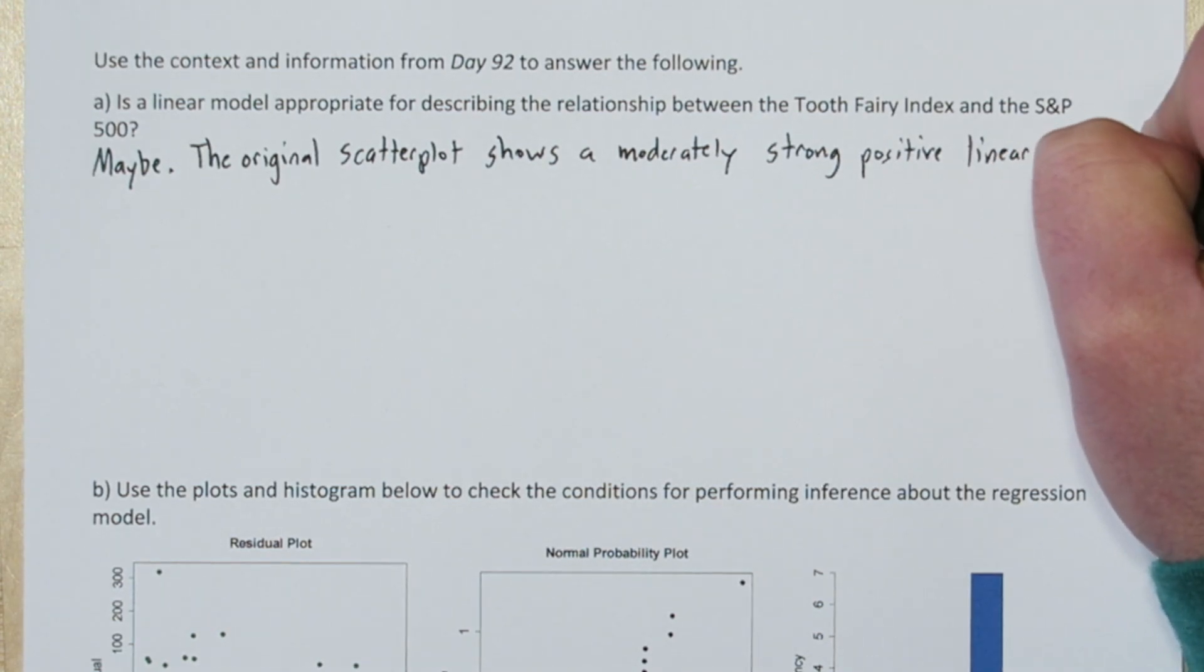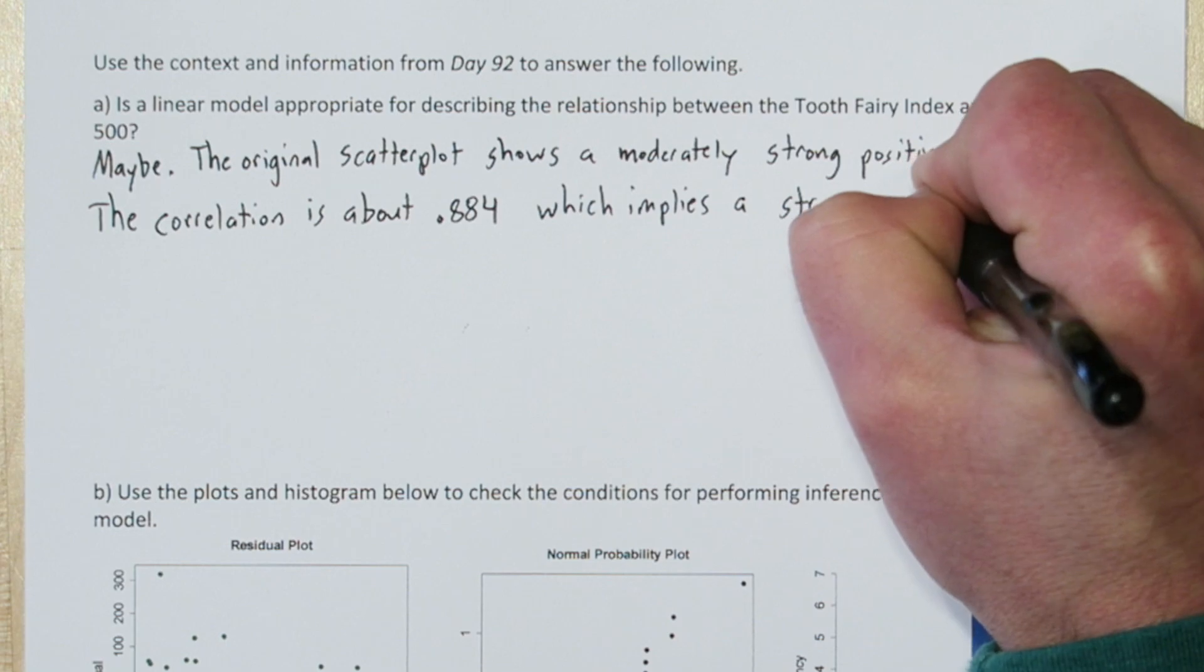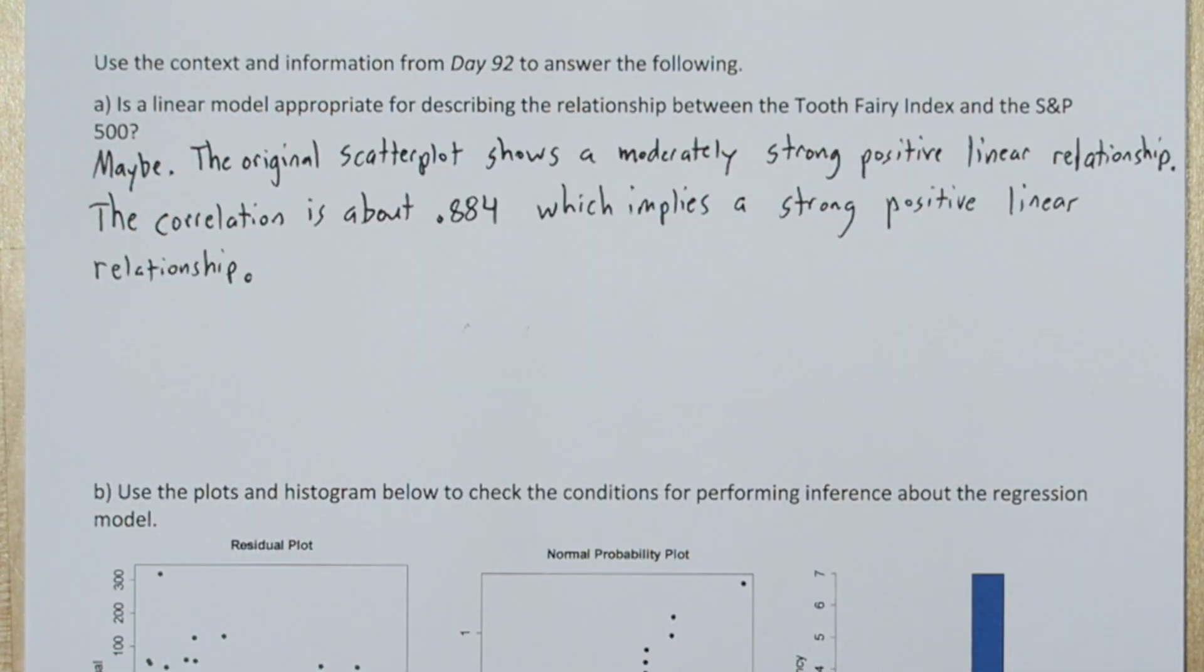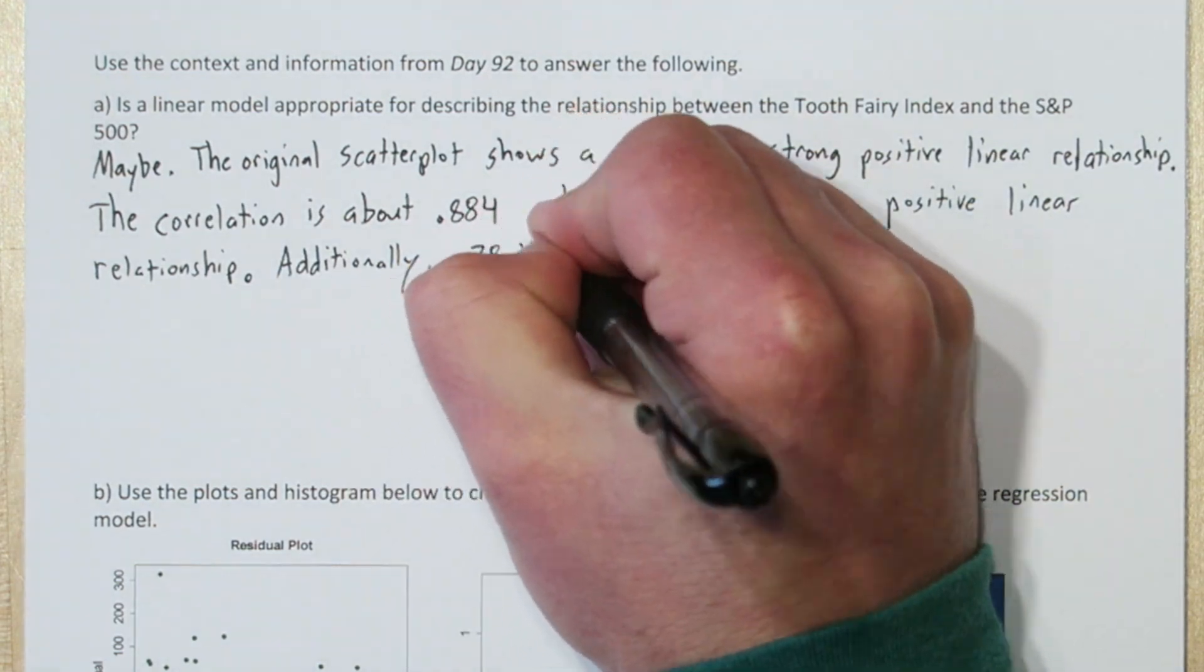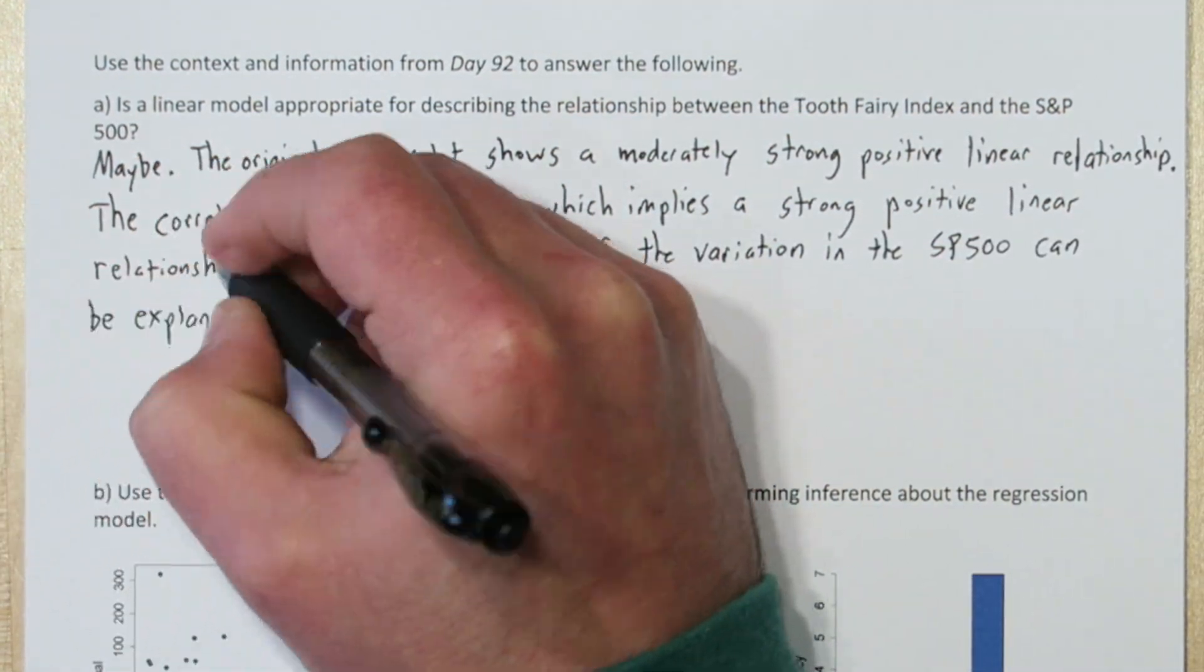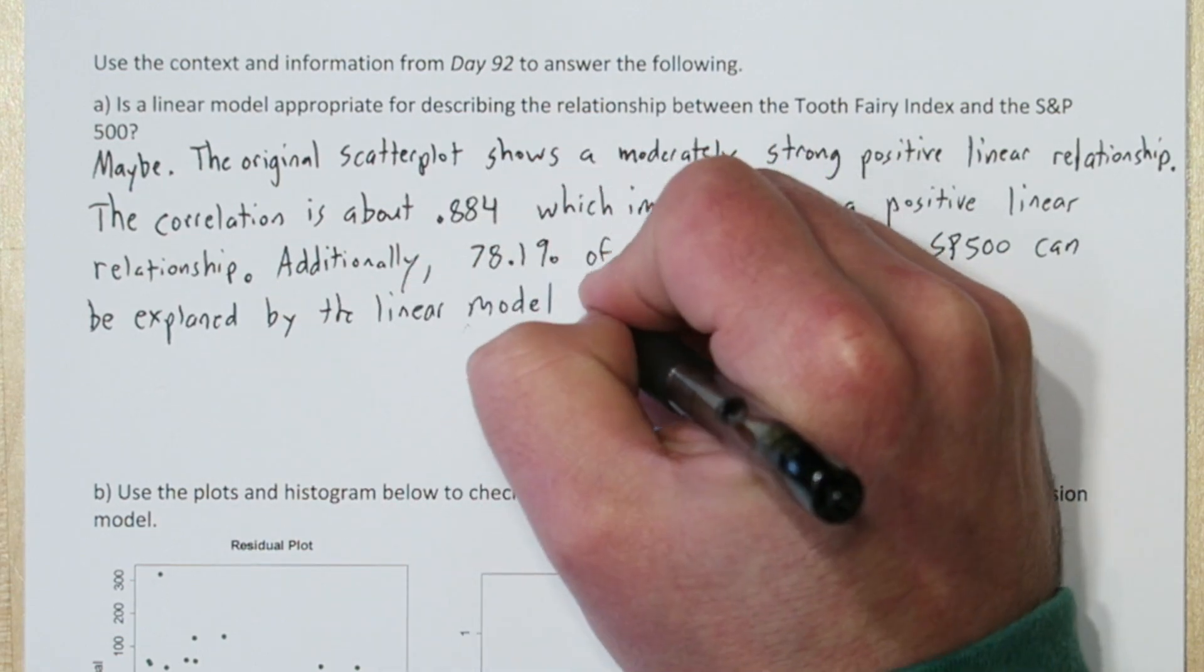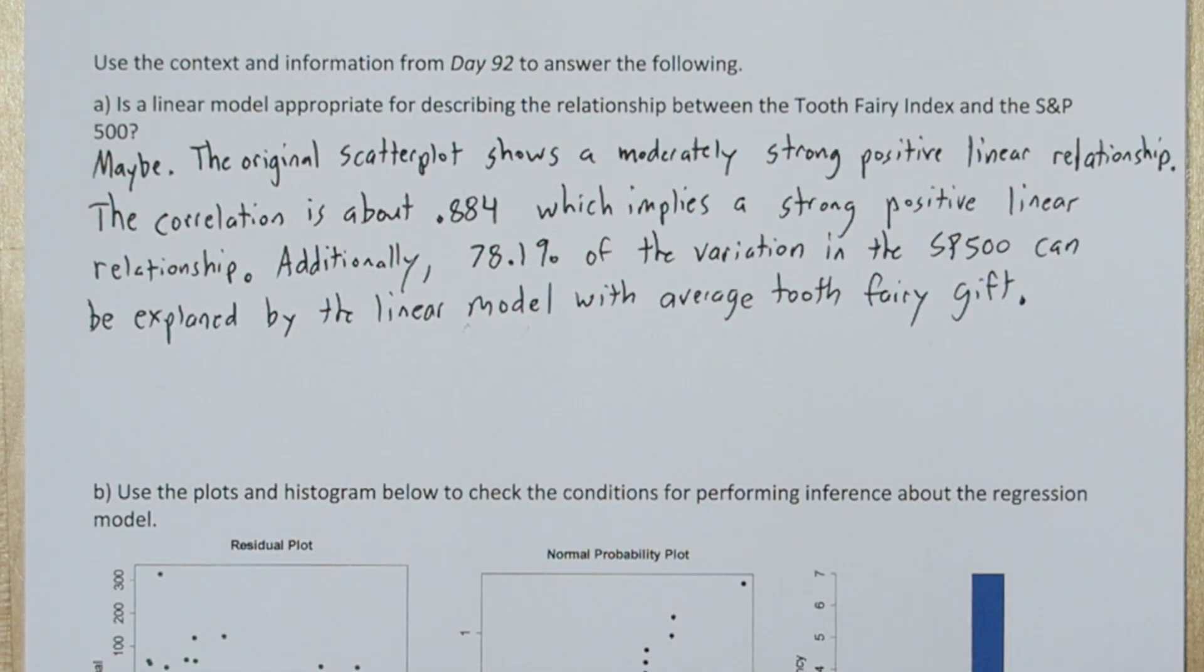Also the correlation was about 0.884, which implies a strong positive linear relationship. We can also look at R squared, which tells us that 78.1% of the variation in the S&P 500's value can be explained by the linear model with average Tooth Fairy gift. So all three of these things point to a linear model being appropriate.